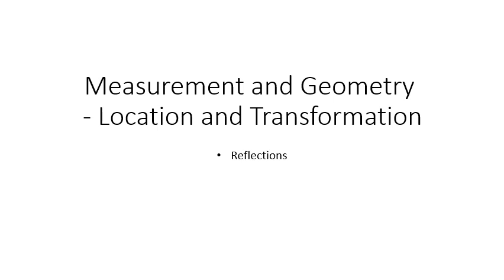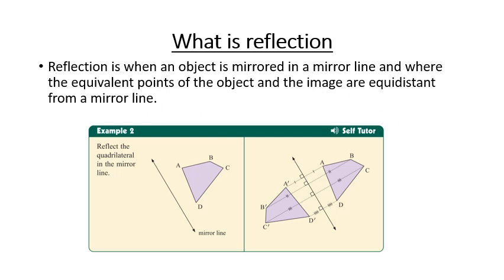This video tutorial looks at the mathematical strand of measurement and geometry, and more specifically we're going to focus on location and transformation. In the previous video we were talking about the three types of transformations — those being translations, reflections and rotations — and this particular video is going to look at reflections. A reflection is when an object is mirrored in a mirror line, where the equivalent points of the object and the image are equidistant, meaning the same distance from that mirror line.